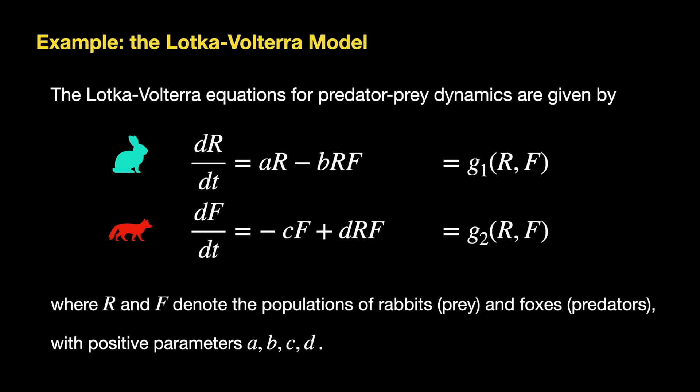Each of these is a derivative, but we can also think of those right-hand sides as functions of the populations R and F. So for notational convenience, I'm going to say that the function aR - bRF is a function we'll name G1 of R and F. And likewise, G2 of R and F will be the function -cF + dRF. So if I use G1 and G2, I'm talking about these right-hand sides.